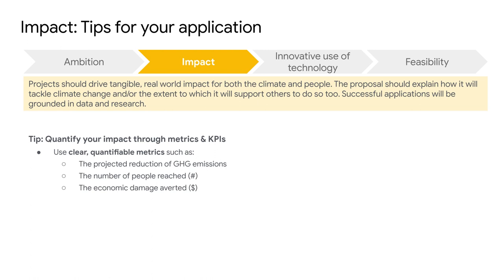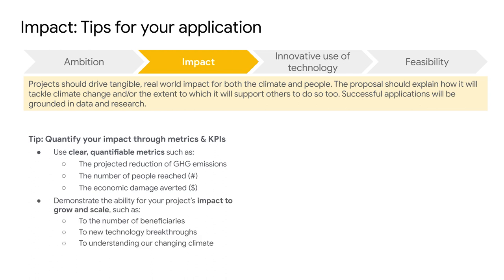After ambition, it's all about impact. The tip here is to include clear, quantifiable metrics to show how you will measure your project goals and how your project will affect both the climate and people. These quantifiable metrics are also synonymous with key performance indicators or KPIs. Some examples of KPIs could include the projected reduction of greenhouse gas emissions, the number of people reached, or the economic damage averted by your proposed solution. In addition to the immediate results of your project, we are also interested in the ability for your project's impact to grow and scale — how could your project reach more beneficiaries, does it bring new technology to the climate space, and will it help us understand climate problems as a whole? These impact metrics should be expressed in a numerical value where possible.